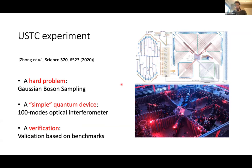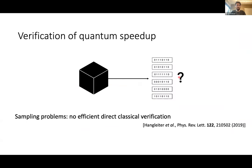These experiments verified specific properties, not the full computation. The reason is the nature of the computational task: the quantum speedup experiment is essentially a black box that outputs random classical numbers, sampling from a specific probability distribution. The target task is to sample from a specific ideal probability distribution corresponding to your computational model.